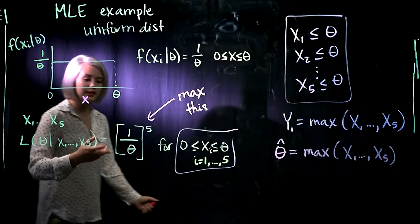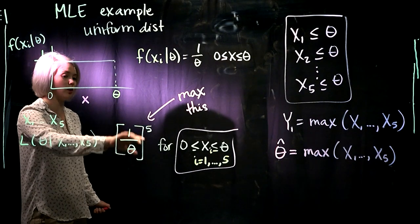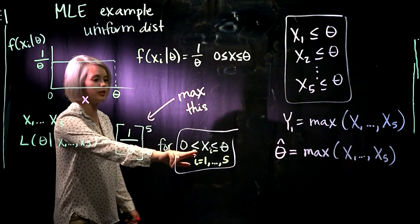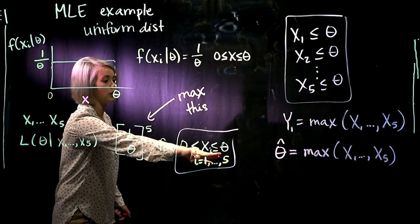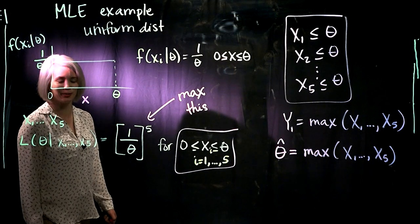So then we can definitely see, yes, this is the smallest theta possible, so then this will maximize the likelihood. And we'll still be playing by the rules, we'll still have theta is greater than or equal to all of those data points that we have collected.